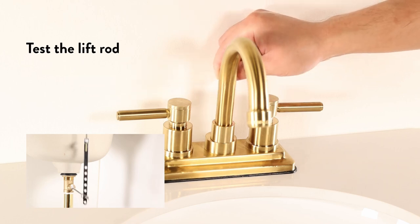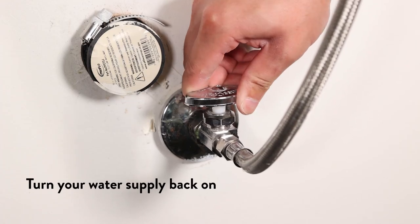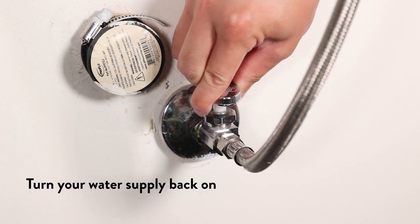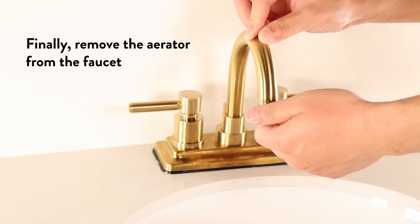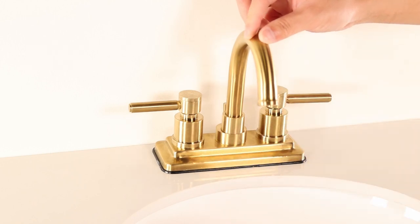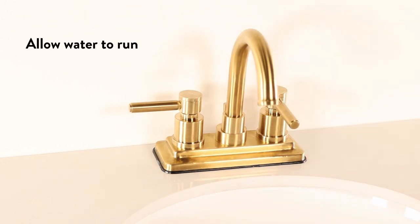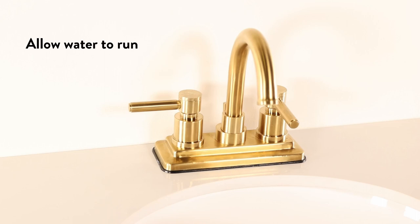Test the lift rod. Turn your supply line back on. Finally, remove the aerator from the faucet. Allow the water to run for a minimum of 30 seconds. This will help clear any debris from the line.